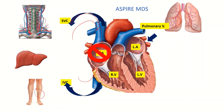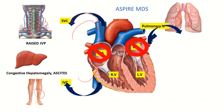If the blood was coming from the jugular veins, liver, or lower limbs, it will accumulate there. Similarly, in left-sided failure, the blood gets congested in the lungs. Clinically, congestion in the jugular veins appears as raised jugular venous pressure; congestion in the liver or spleen presents as congestive hepatomegaly, splenomegaly, or ascites; and congestion in peripheral tissue presents as peripheral edema.